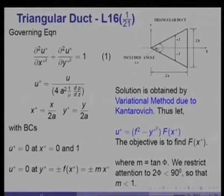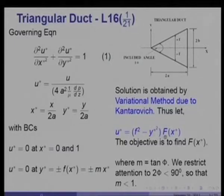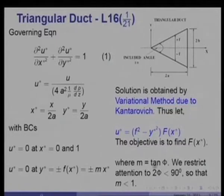For such an equation, a solution can be obtained by the variational method due to Kantorovich. We let u*(x, y) = (f² − y²) · φ(x*), where the objective is to find f(x*) by satisfying the boundary conditions and the equation. We will restrict attention to 2φ < 90°, so that m = tan φ is always less than 1.